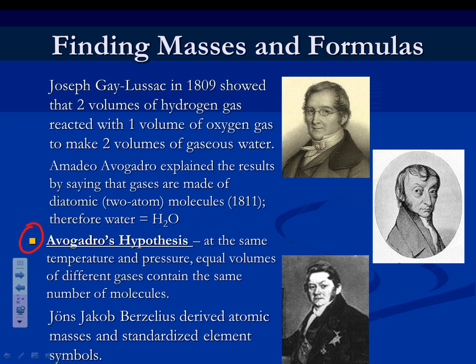Avogadro figured out that oxygen gas isn't just O — it's O2. And that explained a lot. For instance, Dalton thought the formula for water was OH, just one O and one H. Because of Avogadro's idea, they figured out it's two H's and one O, because oxygen is O2. So Avogadro was really important in the history of chemistry, even though he has a really, really ugly picture.